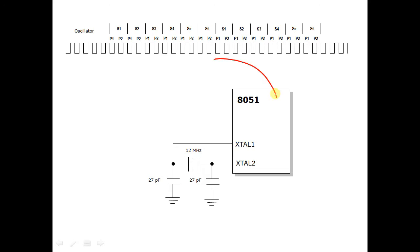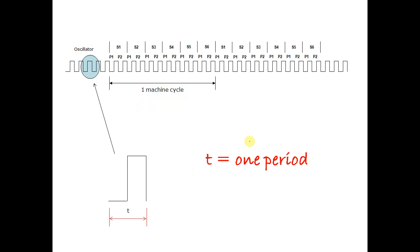The clock circuit generates a clock for the 8051. The 8051 requires a clock to operate. Twelve clocks make one machine cycle. Let's call one period of the clock T.